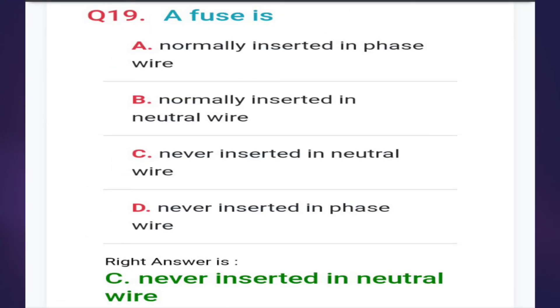Nineteenth: a fuse is normally inserted in phase wire, normally inserted in neutral wire, never inserted in neutral wire, or never inserted in phase wire. The correct answer is option C, never inserted in neutral wire.